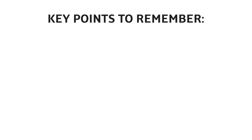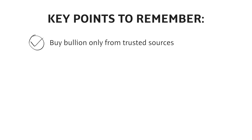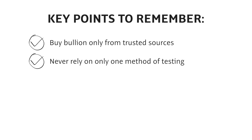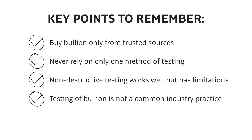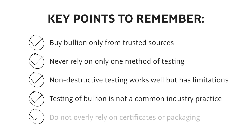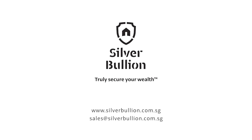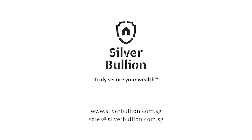Here is a recap of the important points when it comes to testing gold and silver. Your first defense against counterfeit bullion is to buy only from trusted sources. Never rely on only one method of testing — use two or three different testing methods for greater certainty. While non-destructive testing works in most scenarios, realize that it does have its limitations. Testing of bullion is not a common industry practice, as many vault operators store bullion on a said-to-contain basis only. Do not overly rely on certificates or packaging, because these can be easily faked. Arm yourself with knowledge of material properties and common testing methods for gold and silver, and you will be in a better position to truly secure your wealth.